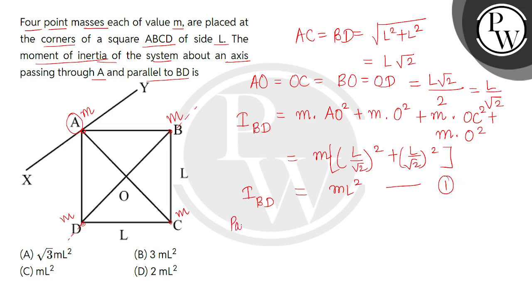Now we will apply parallel axis theorem, because where is the axis passing from? The axis is passing through point A and is parallel to BD. And BD is passing through the center of this square. So we can write I_O equals I_C plus M H square, where H is the perpendicular distance between this XY axis and BD diagonal, and its value is L divided by square root 2, that is half of the diagonal.